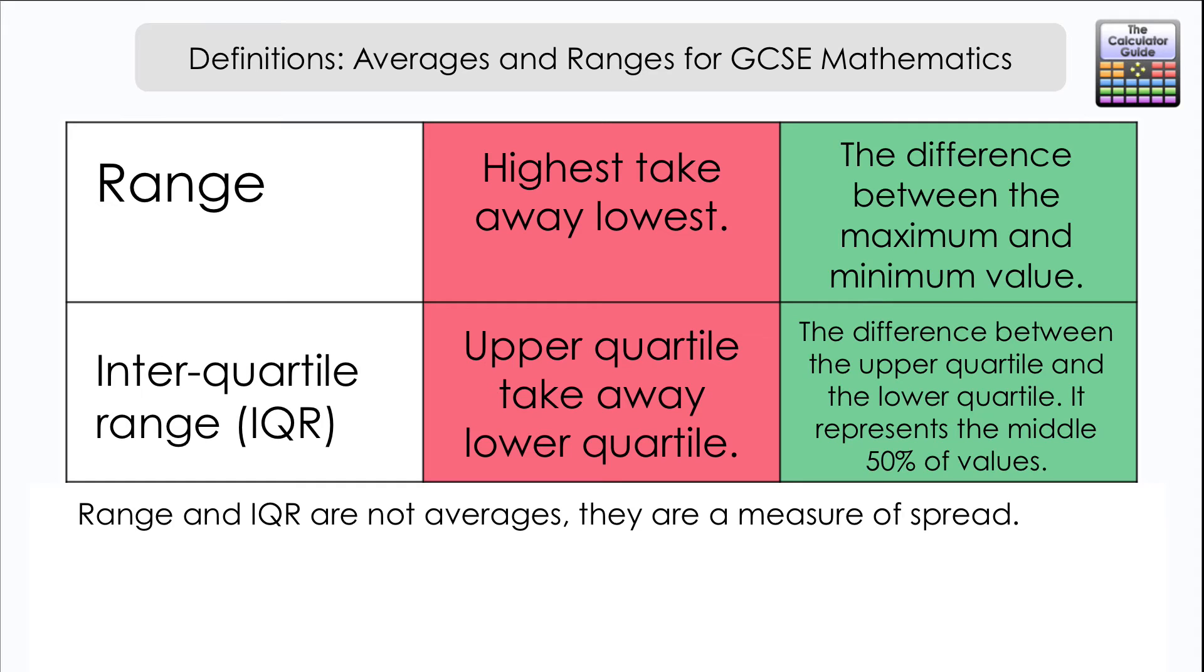It represents the 25% that's above the median and the 25% that's below the median. We're eliminating the highest 25%, the highest quarter, and the lowest 25%, the lowest quarter.